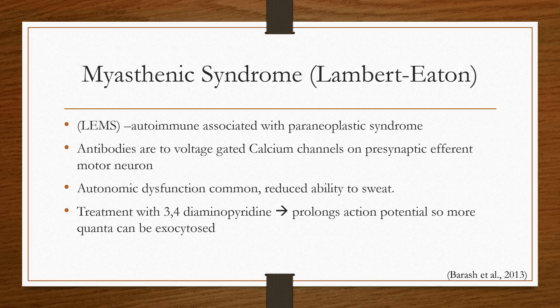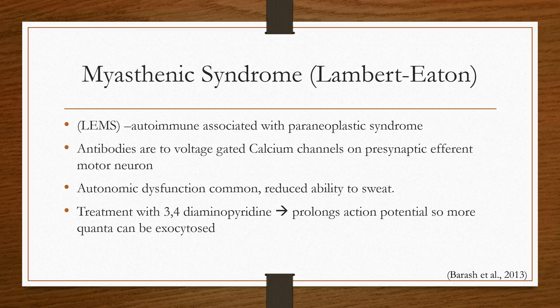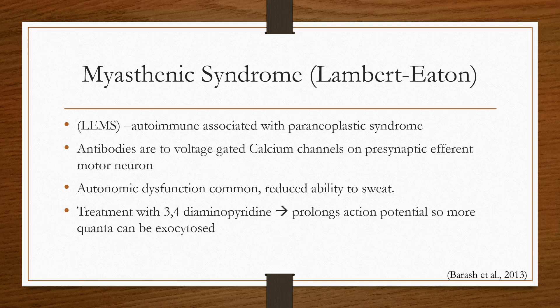Unlike myasthenia gravis, Lambert-Eaton patients will have autonomic dysfunction — they'll have wide swings in blood pressure and heart rate and won't react as anticipated to position changes, with a reduced ability to sweat. Be vigilant with forced air warming devices and monitor temperature closely. Treatment is 3,4-diaminopyridine, which prolongs the action potential, allowing more time during depolarization for acetylcholine exocytosis so that those working calcium channels can allow more calcium entry to have that effect.